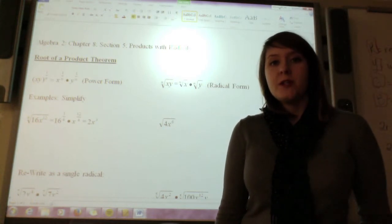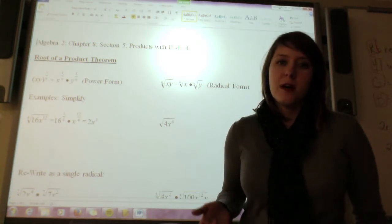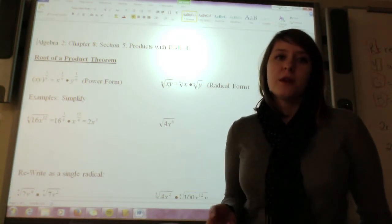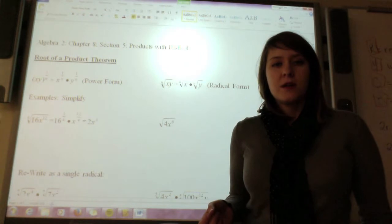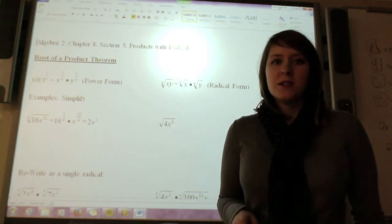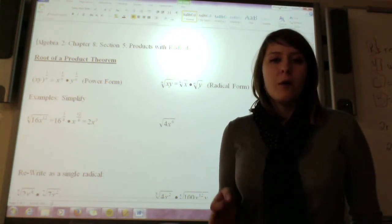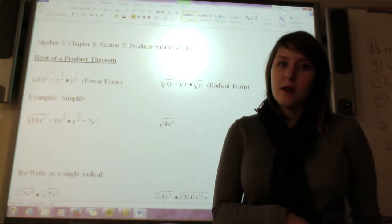So in the last section, we talked about how to actually simplify radicals down using our exponential form. Now we're going to do products with radicals, and we can change it into exponential forms to make that easier for us. This is a pretty easy section. Again, this is all stuff that we've done before in exponential form. All we're doing now is moving it over into radical form.